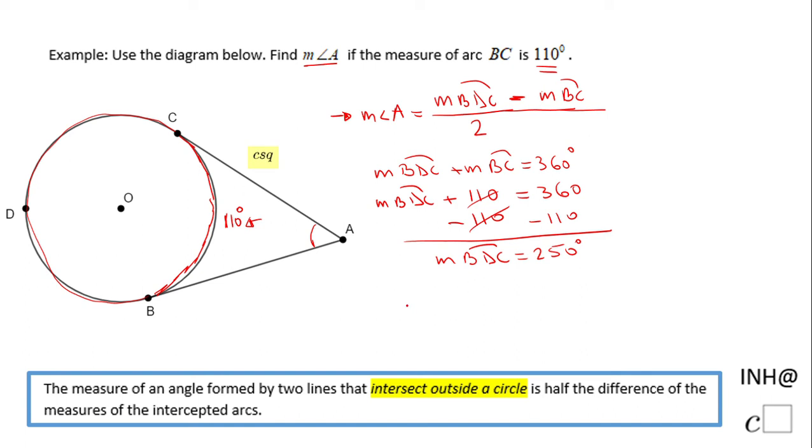The measure of angle A will be 250 minus 110 divided by 2. That will be 140 divided by 2.